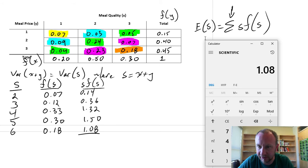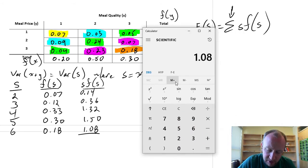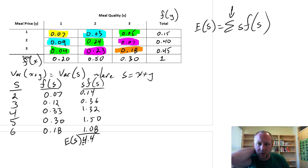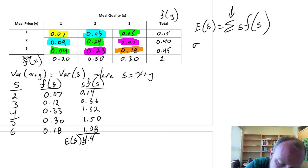So we'll start at the bottom. I've already got 1.08 in my calculator. So we'll move up from there. Plus 1.5, plus 1.32, plus 0.36, plus 0.14. And I get a value of 4.4. So that's my expected value of s. Now we don't actually need that to respond to one of the questions. That's just an intermediate step.